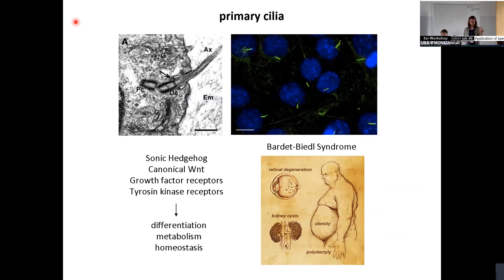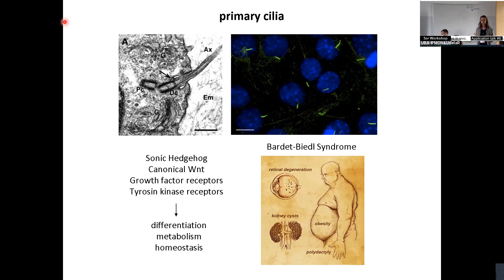Patients that present mutations affecting genes related to the formation or function of primary cilia develop a group of diseases called ciliopathies. Among them, the one we are studying at the human molecular genetics lab is Bardet-Biedl syndrome. One of the manifestations of this syndrome is obesity, so we think that by studying how obesity develops in these syndromes we can also gain information on non-syndromic, common obesity.